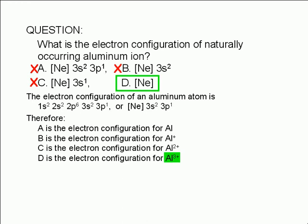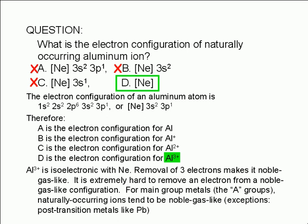Why? Aluminum with a plus 3 charge is isoelectronic with neon, which is a noble gas. In other words, removal of 3 electrons from an aluminum atom takes out all the valence electrons, leaving behind a noble gas-like configuration. It is extremely hard to remove an electron from a noble gas-like configuration.